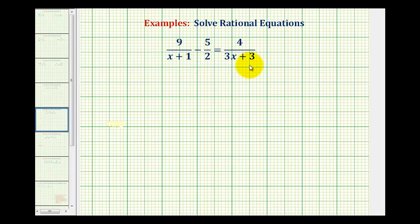To solve the given rational equation, our goal is to clear the fractions by multiplying every fraction by what would be the least common denominator. So the first step is to determine what the least common denominator would be.